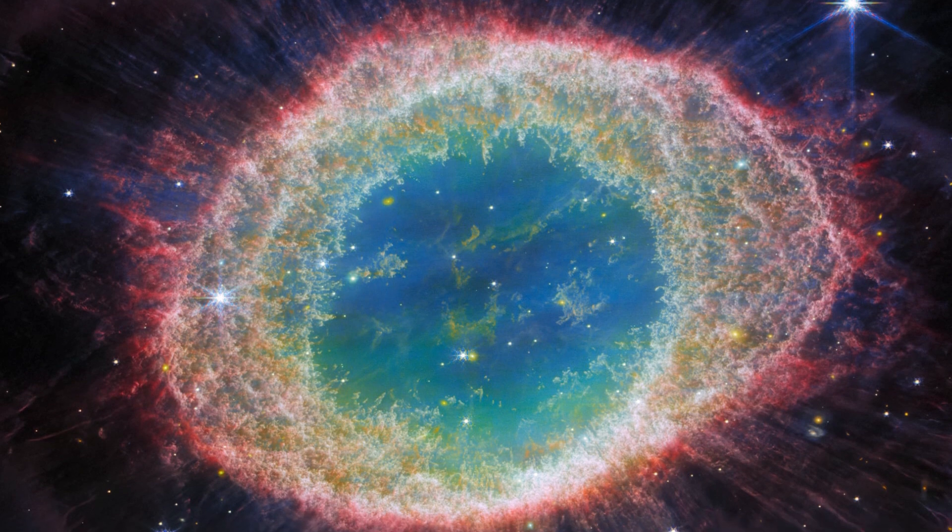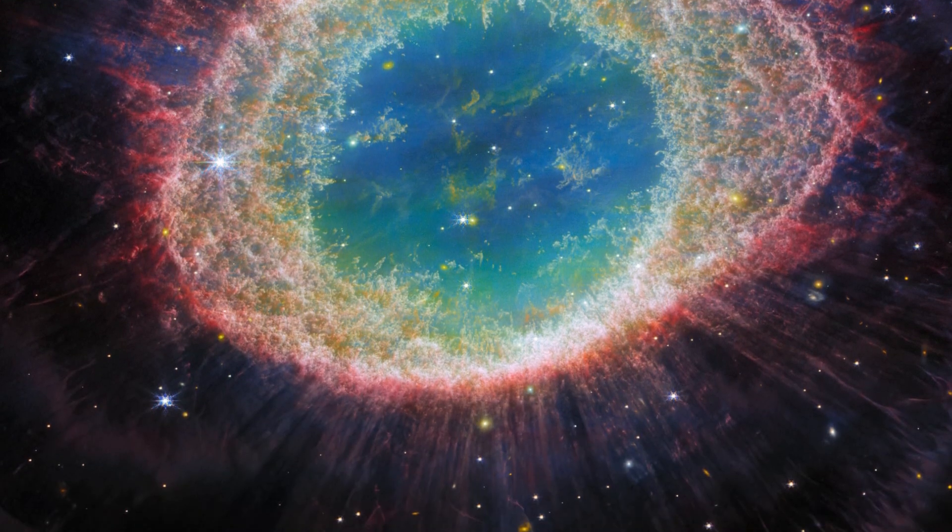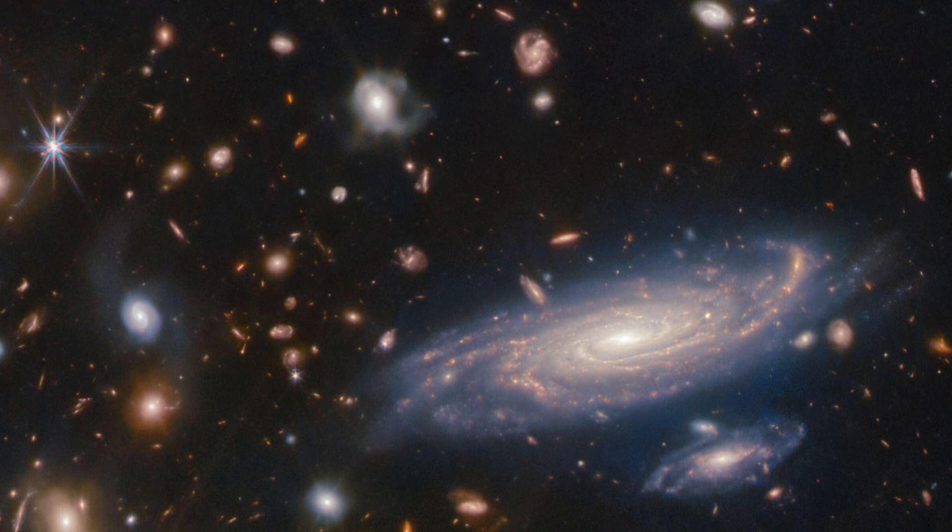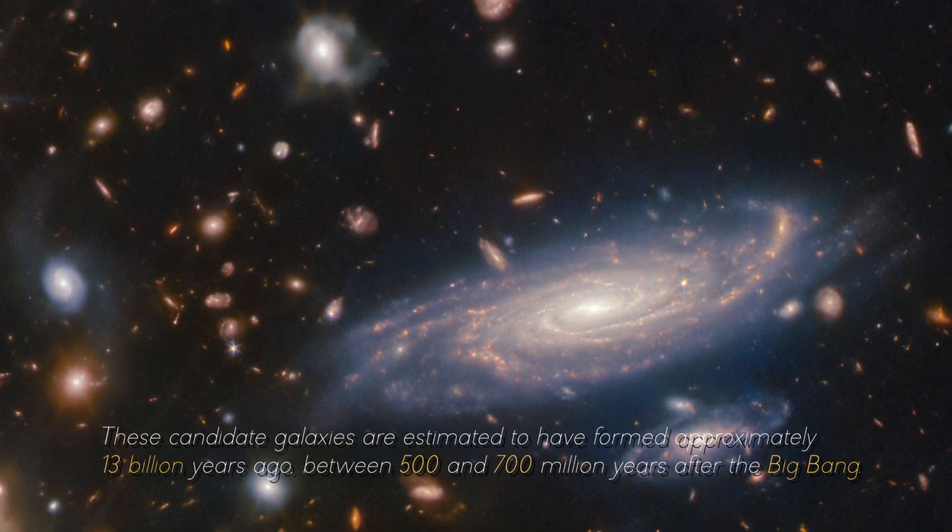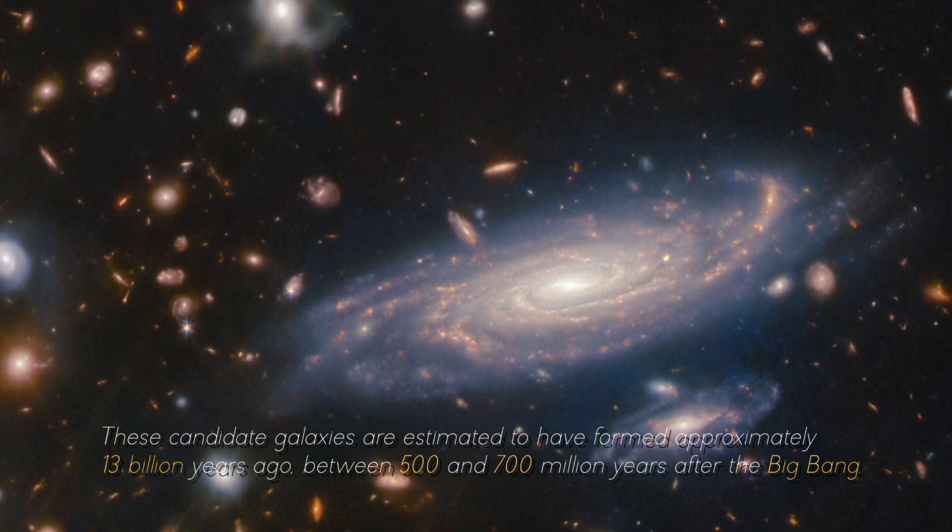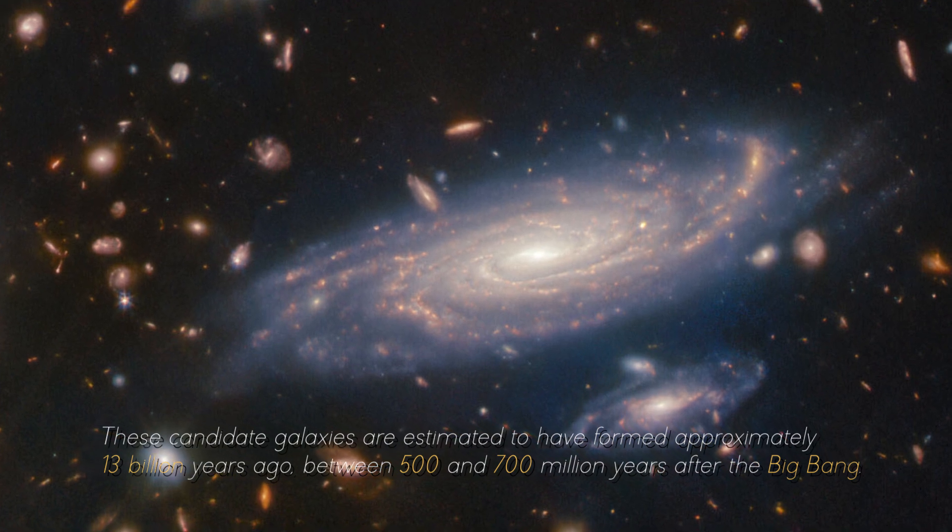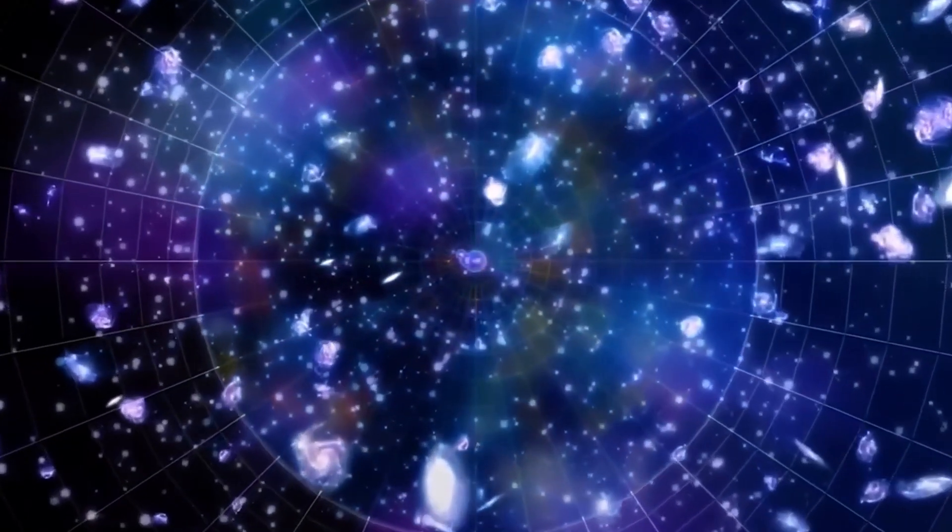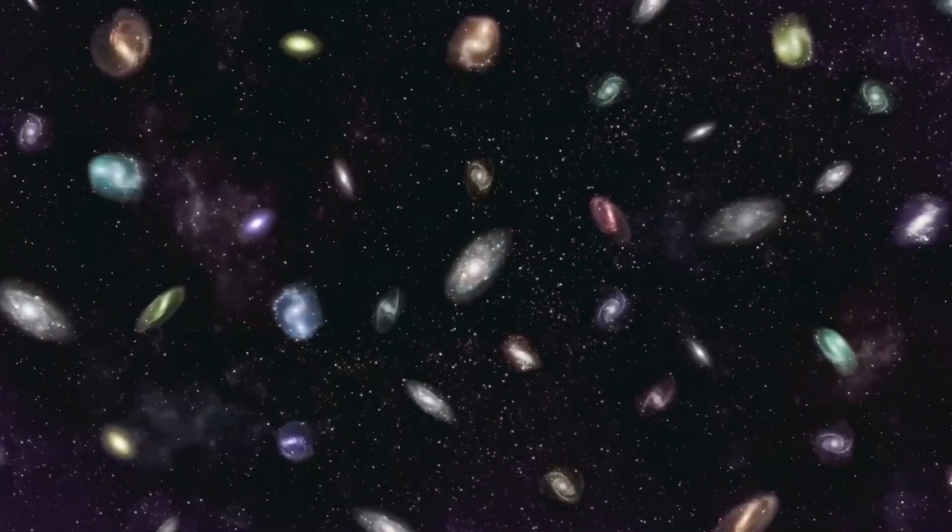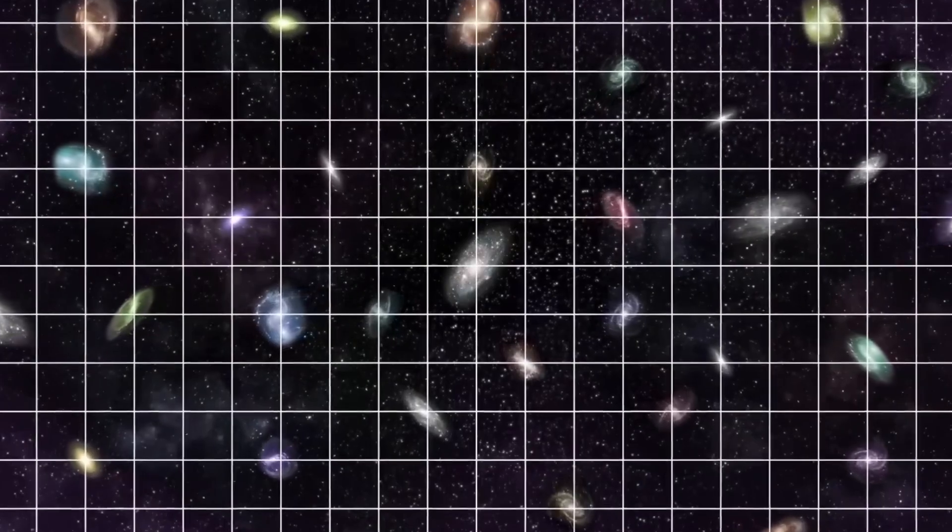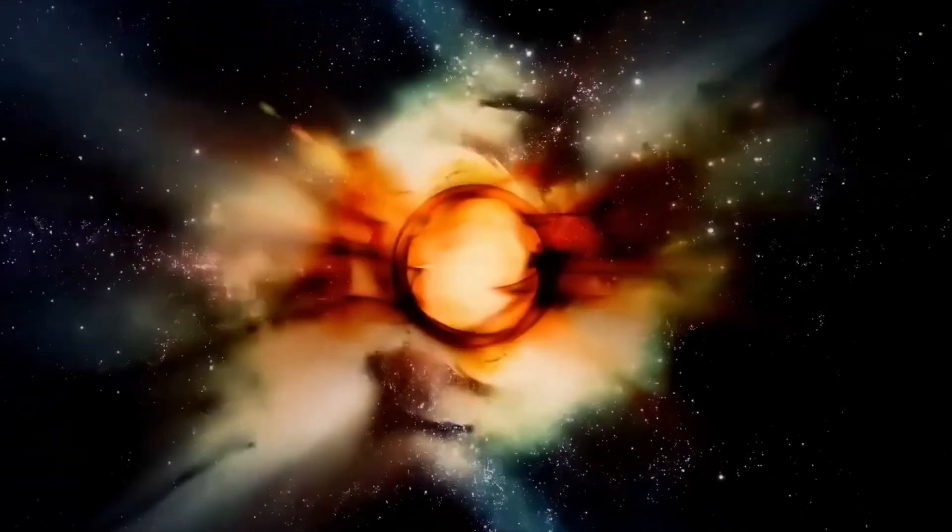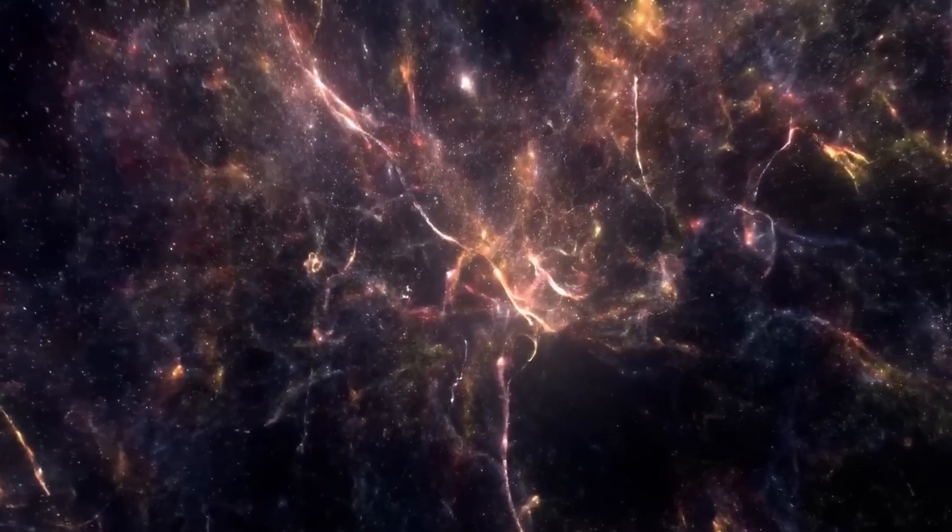However, images captured by the James Webb Space Telescope are challenging the Big Bang Theory, as they show galaxies of enormous sizes that appear not to have been able to exist or are not consistent with the Big Bang Theory. These candidate galaxies are estimated to have formed approximately 13 billion years ago, between 500 and 700 million years after the Big Bang. Astronomers had the expectation of observing young, small galaxies in this region of early space. However, images captured by the space telescope reveal that the stellar systems may contain about the same number of stars as our own Milky Way galaxy, instead of finding tiny young galaxies, discovering mature galaxies similar to our own in what was thought to be the dawn of the universe.